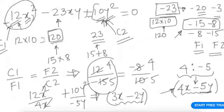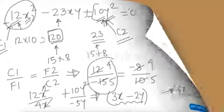So the second factor is 3x − 2y, and the first factor is 4x − 5y, or vice versa. The two factors are (4x − 5y)(3x − 2y).